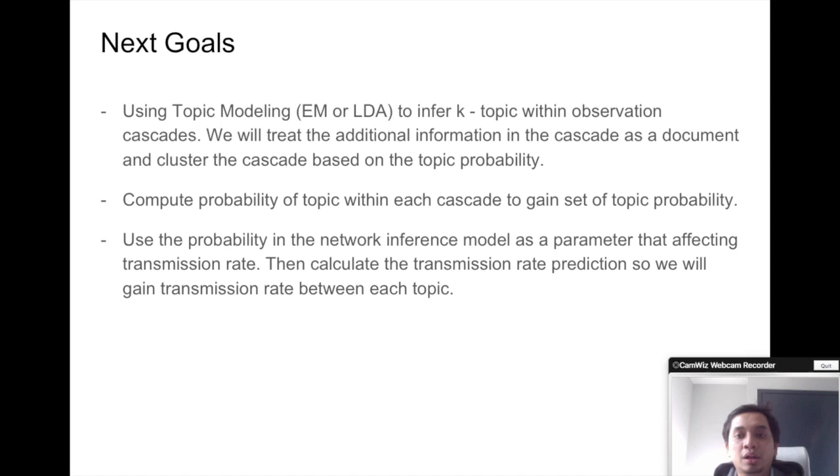And using the topic probability, we will use that information to separate the topics and predict different transmission rates between all these topics and improve the model. Therefore, we hope that we can minimize the false negative prediction of the transmission rate.